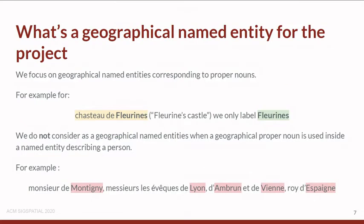What is a geographical name entity for this project? We focus on geographical name entities corresponding to proper nouns. For example, in 'Château de Florence' we only label Florence. We do not consider as geographical name entities those which are geographical proper nouns inside a person name. So geographical entities describing person names like Monsieur de Montigny, Roi de France, or Roi d'Espagne are not considered as geographical name entities.